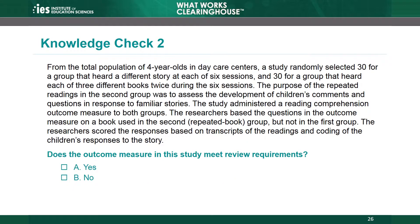Knowledge Check 2. From the population of 4-year-olds in daycare centers, a study randomly selected 30 for a group that heard a different story at each of six sessions, and 30 for a group that heard each of three different books twice during the six sessions. The purpose of the repeated readings in the second group was to assess the development of children's comments and questions in response to familiar stories. The study administered a reading comprehension outcome measure to both groups. The researchers based the questions on a book used in the repeated book group but not in the first group, and scored responses based on transcripts of the readings and coding of the children's responses. Does the outcome measure meet review requirements?